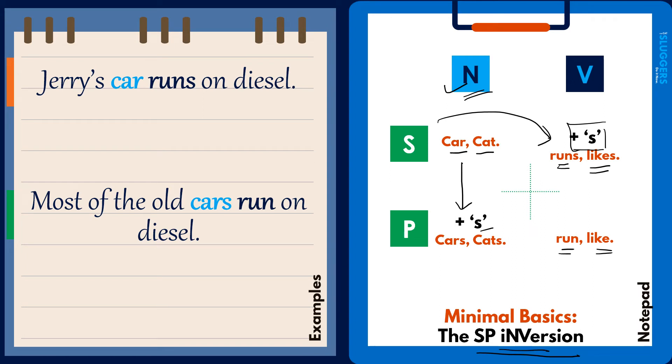For example, in this sentence, the noun is singular in nature as well as the verb. They are both singular in nature, but the noun does not have an 's' and the verb does have an 's,' which you can see. Similarly, in the next sentence, look at this. You have the noun in the plural form as well as the verb is also in the plural form. But for the noun you do have an 's' here, but we don't have an 's' for the verb. So that's what the SP inversion is.